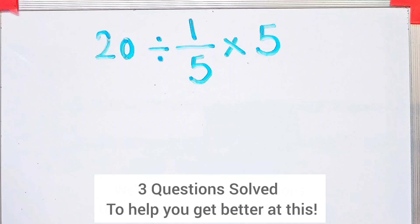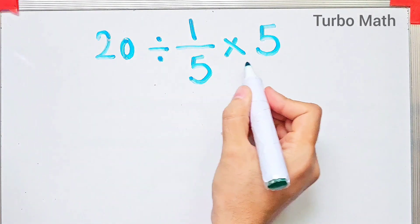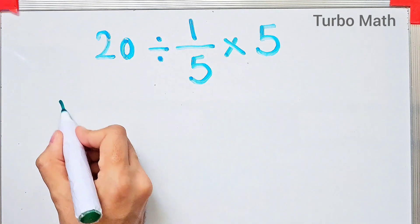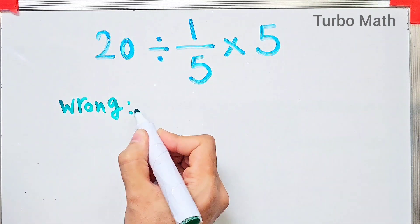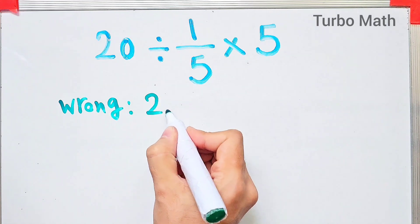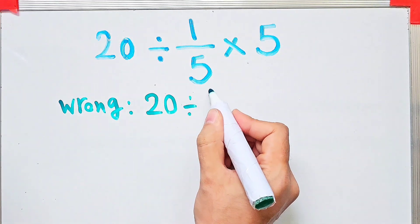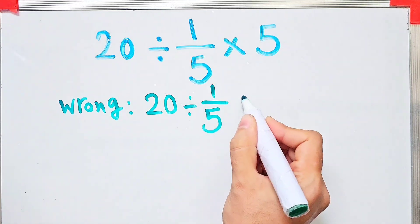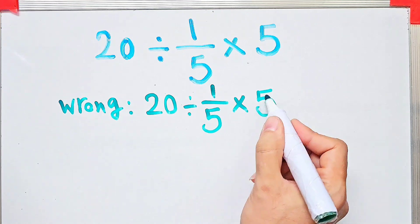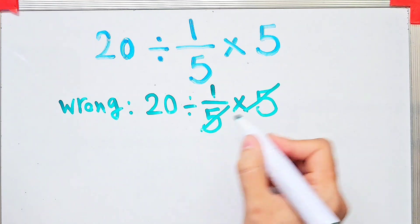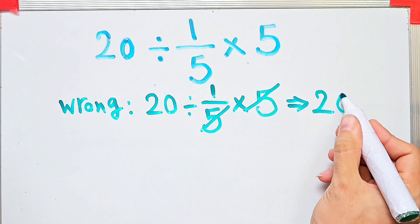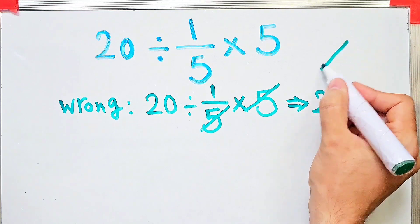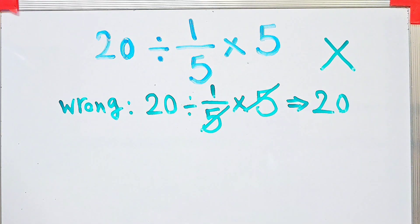Hi friends, welcome to Turbo Math channel. What is the value of this expression — can you solve it? 20 divided by 1 over 5, then times 5. In the wrong way of solving this question, some people start simplifying like this: first they do the multiplication, then they cancel out the fives and get 20 as the answer — but that's definitely wrong.